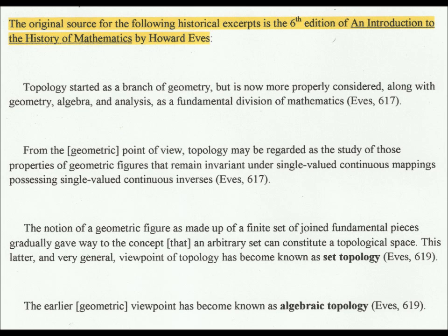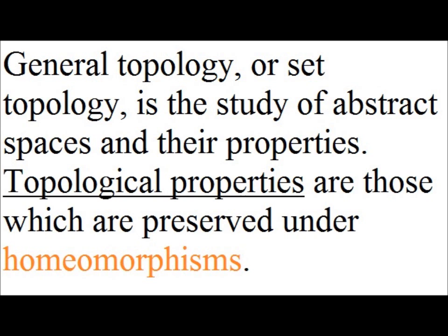Mathematicians began to conceive of a geometric figure in space as being made up of a finite set of joined fundamental pieces. This gradually led to the concept that any arbitrary set of elements can constitute a topological space, and it is this latter viewpoint that has evolved into what we today know as set topology or general topology. The earlier geometric viewpoint has evolved into what we know today as algebraic topology. General topology has evolved into the study of abstract spaces and their properties.